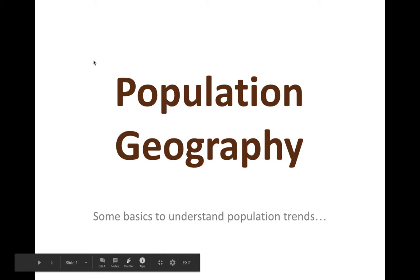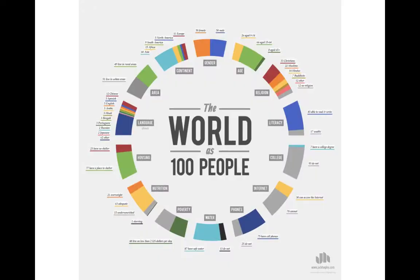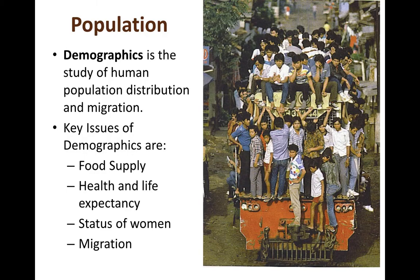Hi everyone, it's Mrs. Ernest live from her classroom talking about population geography and some of the basics to understand about population trends. This is a really cool infographic — I gave you a video to watch about the people of the world as if they were 100 people. You can see age, religion, literacy, language, and nutrition. The world is an incredibly diverse place, and we call the study of that diversity demographics — the study of human population distribution and migration.